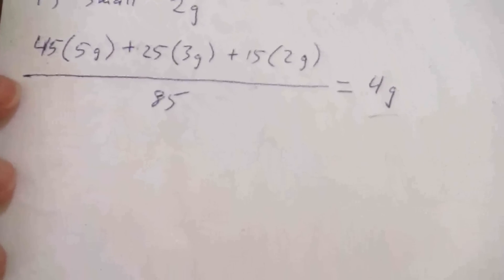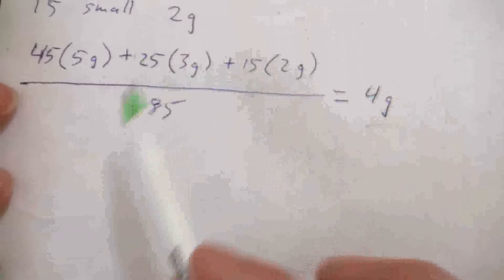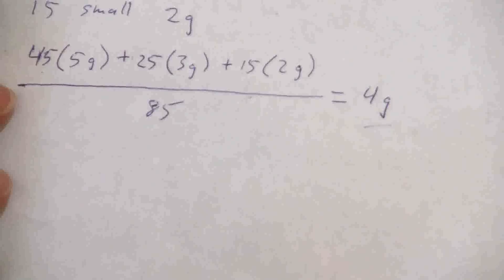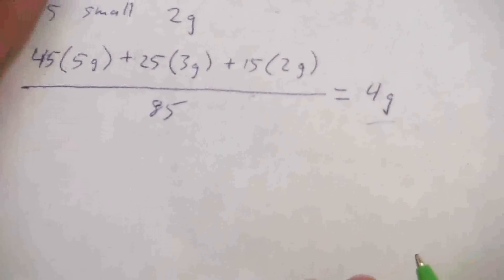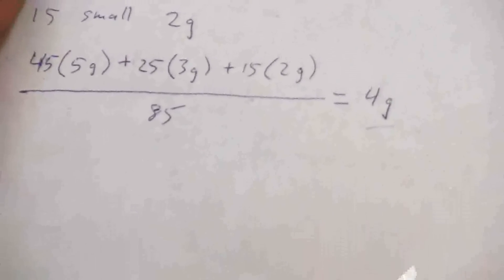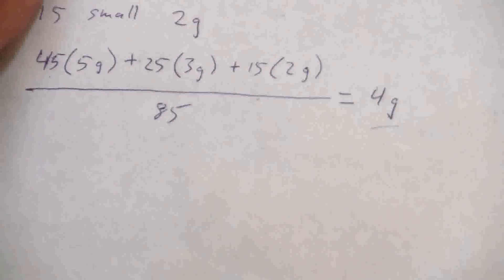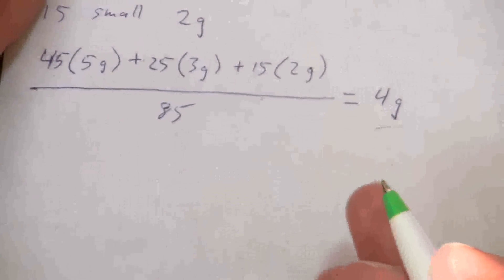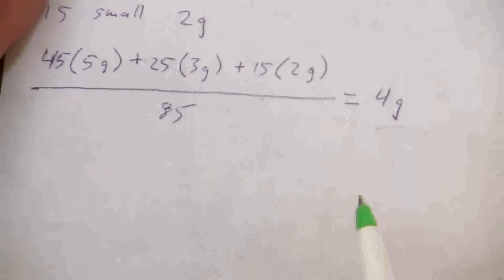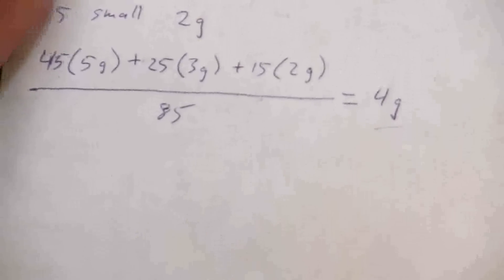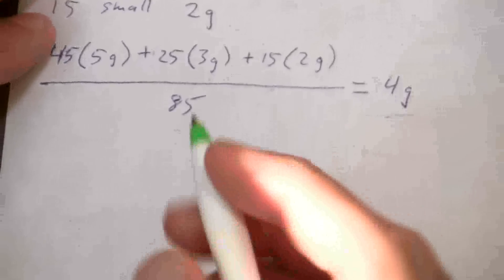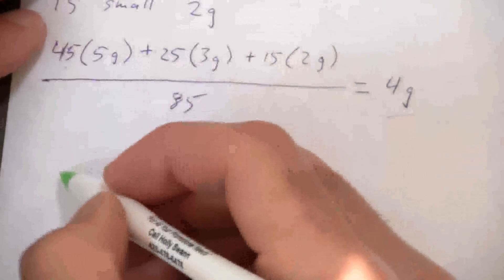Now in chemistry, we do this same thing for the elements on the periodic table. It turns out that each element, or at least most of the elements, have different atoms, they're composed of different atoms that each have a different weight. A different physical weight.